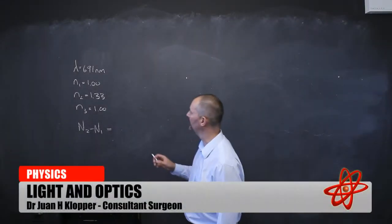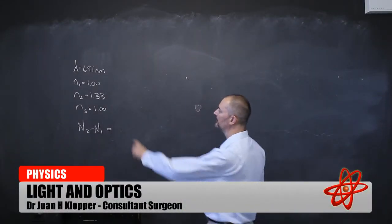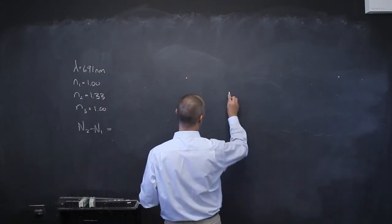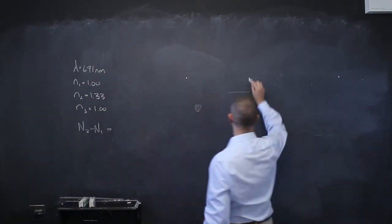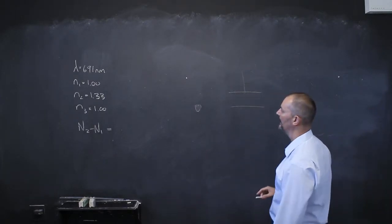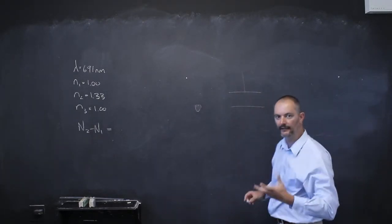Let's do some proper problems. I have a thin film with a reflective index of 1.33 in air. My incident light is at that wavelength, almost perpendicular, and what I want to see on this side is bright light.